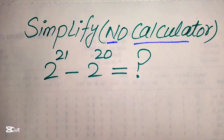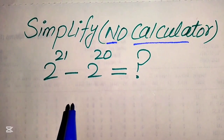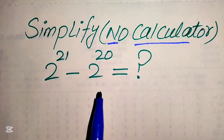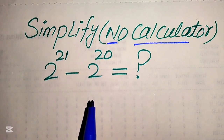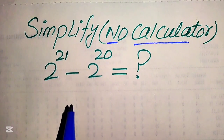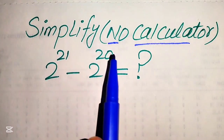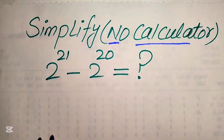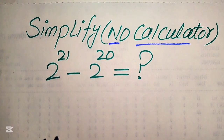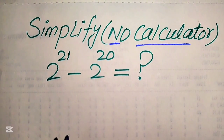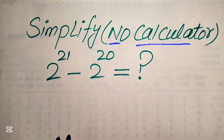Hello everyone, today I want to show you how to simplify this algebraic expression. If we have 2 to the power of 21 minus 2 to the power of 20, we write this algebraic expression into the lowest form. Note that a calculator is not allowed in this problem, so we will show all of the working on paper. I hope you like this method, but if you have any other method in mind, please don't hesitate to write it in the comment section.